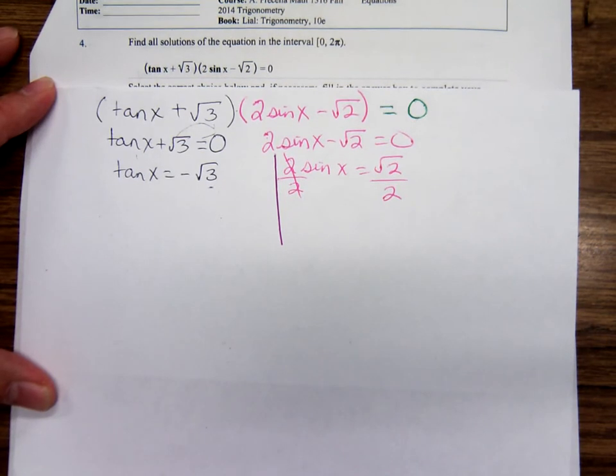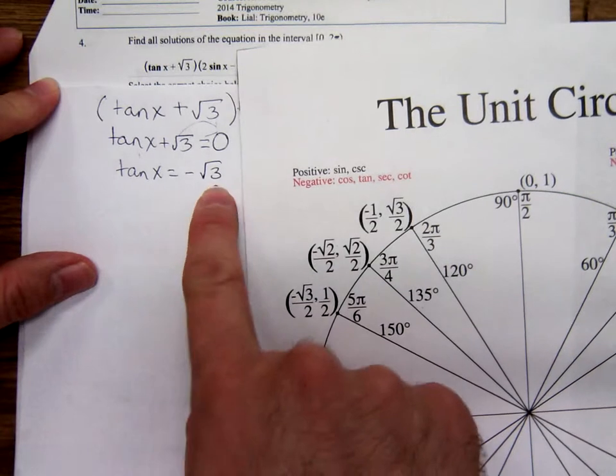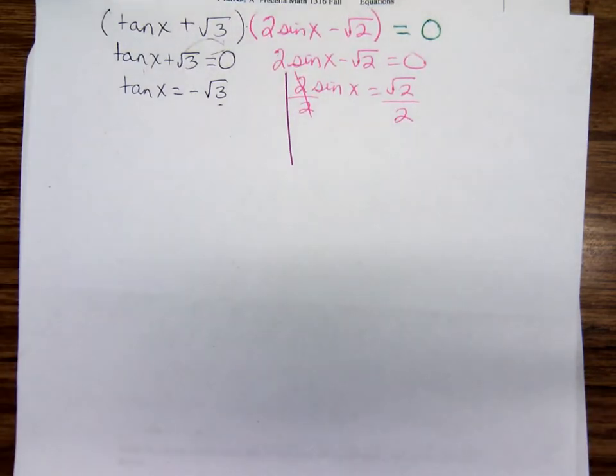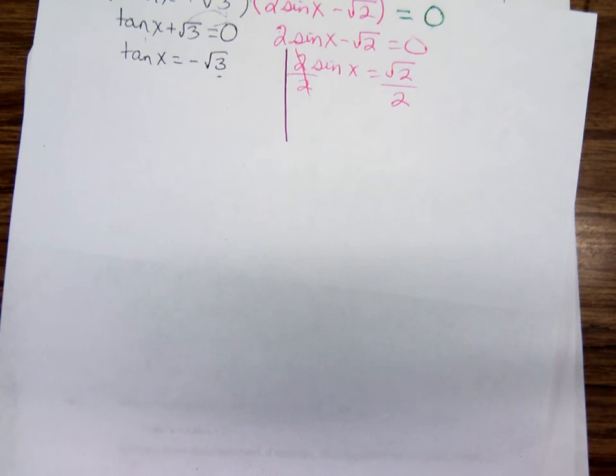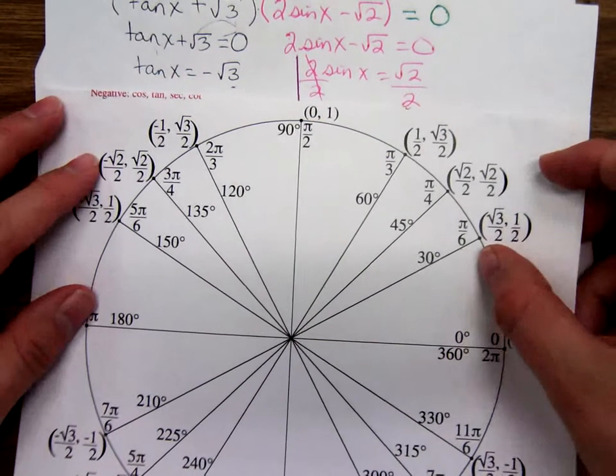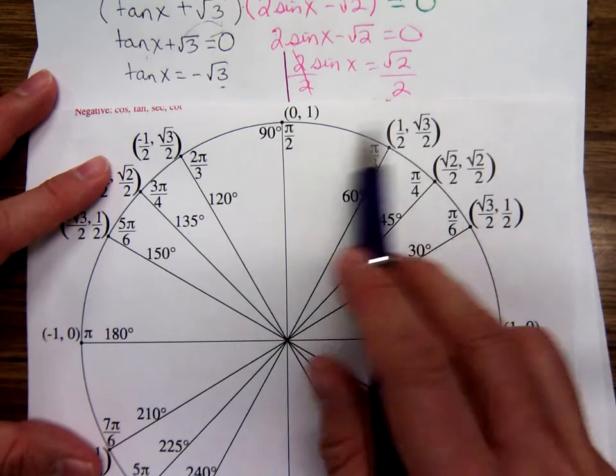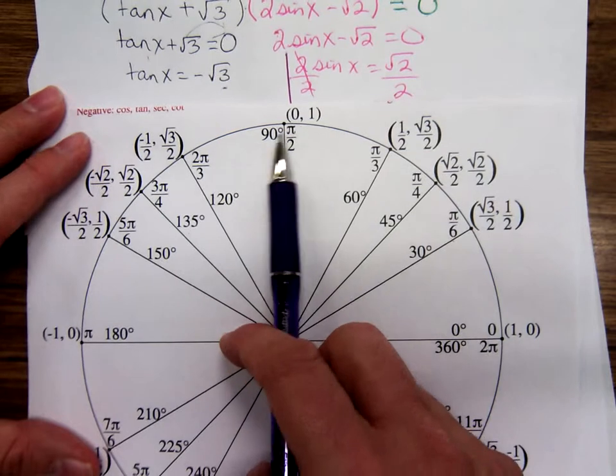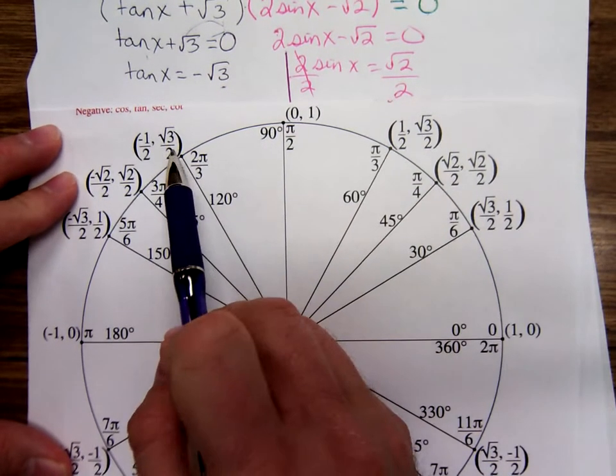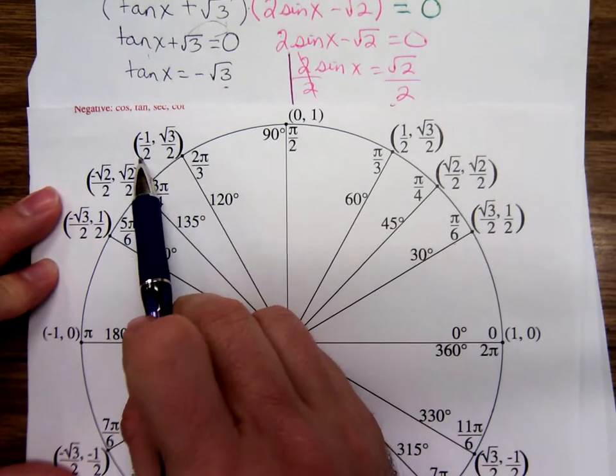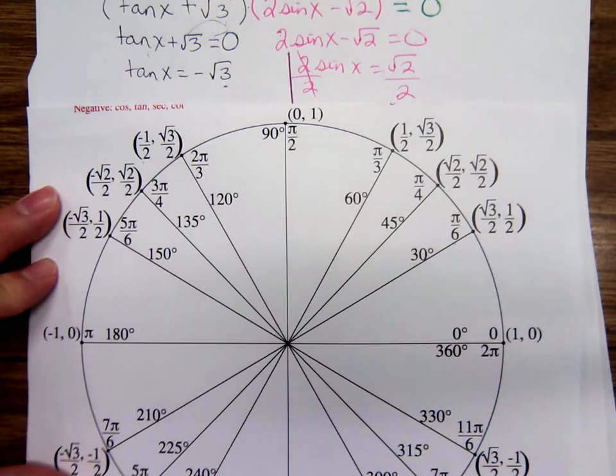Where on the unit circle is tangent negative square root of 3? Let's see. Where's tangent negative square root of 3? It's sure not in the first quadrant. In the first quadrant, tangent is positive. What about in the second quadrant? Sine over cosine. Which one of those, if you go sine over cosine, it's going to simplify to just a negative square root of 3? 2π over 3.